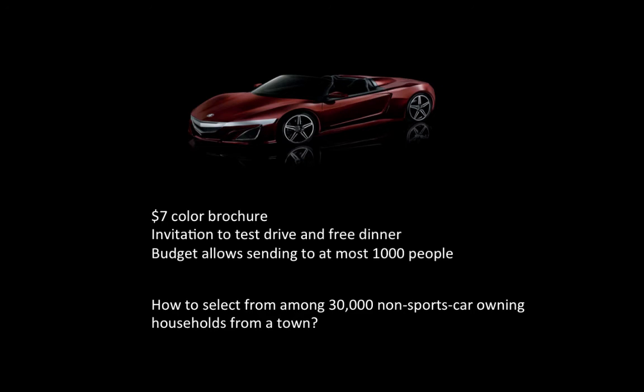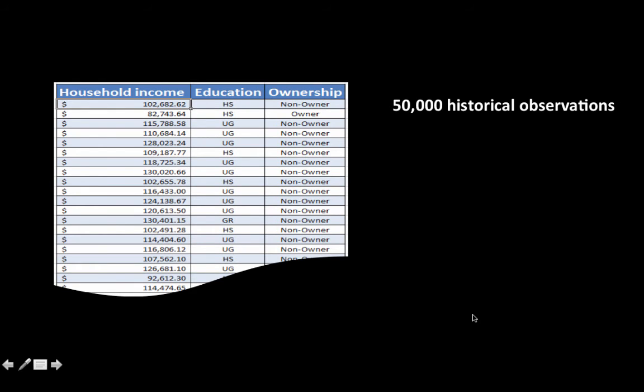So we do not know that just income or just wealth or just a few criteria will predict it. So what we would like to do then is to use historical information and try to find out who are the people who are most likely to buy a sports car. So let's say we've got data on 50,000 historical observations. In other words, 50,000 people in the past to whom you have made such offers and who have either purchased the car or not purchased the sports car.